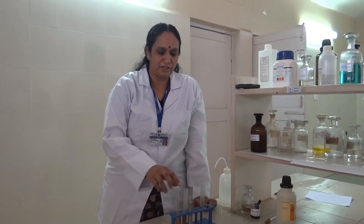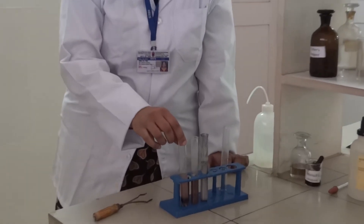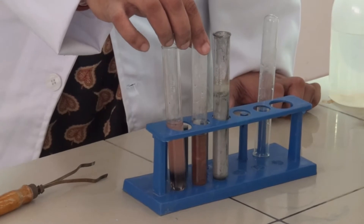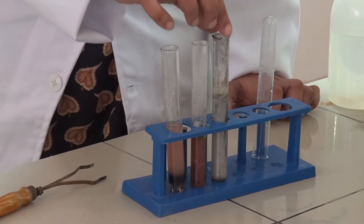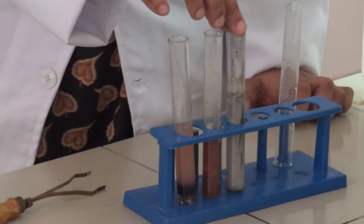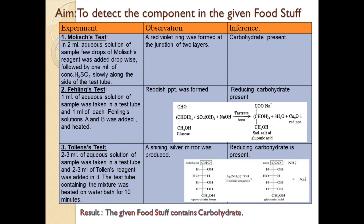As we can see, all three confirmatory tests are quite visible. The first was the Molisch test — the ring proves the presence of carbohydrate. The Fehling's reagent has been reduced to the reddish brown precipitate. And this is the silver mirror test which confirms the presence of a reducing carbohydrate. Now record these three experiments, their observations and inference in your practical record. Don't forget to write the aim, the experiment, observation, inference and the result.